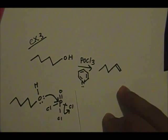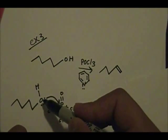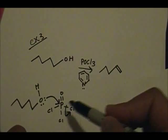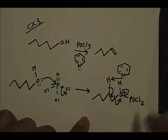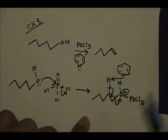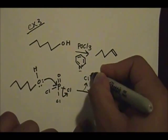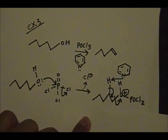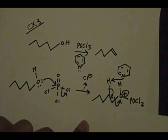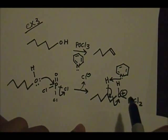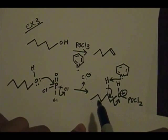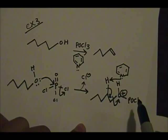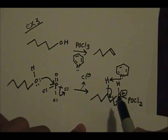First step: the oxygen from the alcohol makes a bond between the oxygen and the phosphorus, and the chlorine pops off. That is what you form — it looks kind of messy and intimidating, but don't be scared. Follow the generic example from the second part. Our alcohol piece now has POCl₂ bonded to the oxygen.